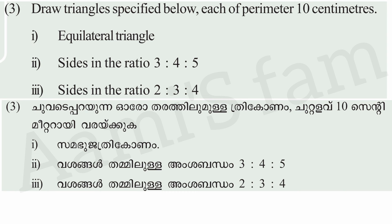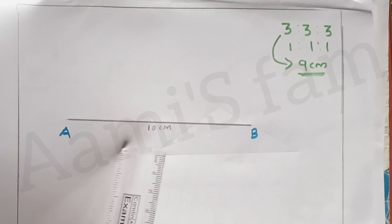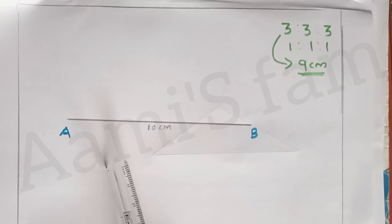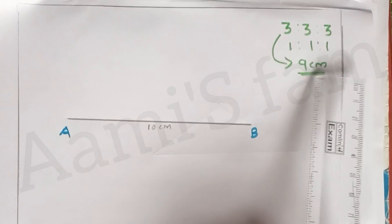Third question: Draw triangles as specified below, each with a perimeter of 10cm. We are going to draw a triangle. If we see one of the other sides, we are going to get 10cm. The triangle's perimeter — if we see the triangle's perimeter, the line will be the same. We have 10cm in the perimeter, which means we have an equilateral triangle.